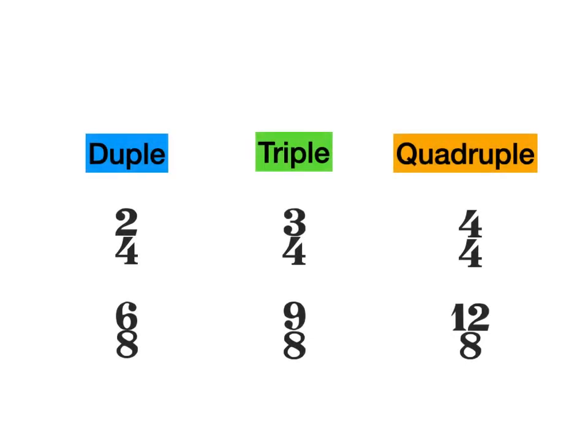So let's put them in a table. As you can see to the left, we have our two examples of duple time signatures: 2/4 and 6/8. In the middle, we have two examples of triple time signatures: 3/4 and 9/8. And to the right, we have two examples of quadruple time signatures: 4/4 and 12/8.